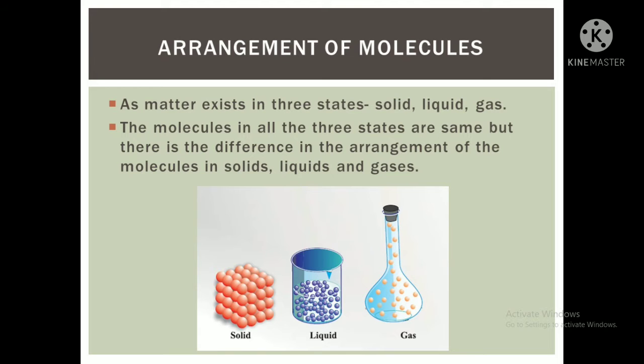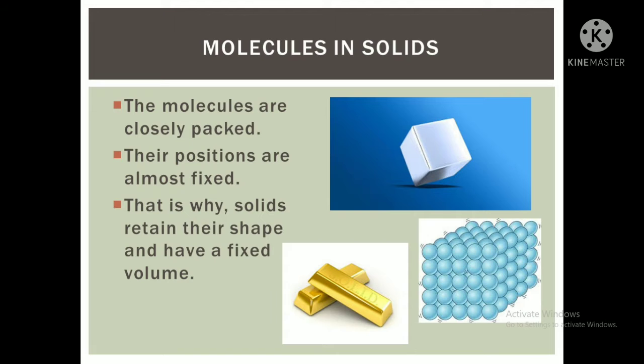Molecules in solids. So molecules in solids are closely packed, one after one. That means they have very good bonding between them. And what will happen if they have very good bonding? It will not go - means all are friends to each other, all help each other. They have a fixed position in their place. So they are almost fixed and they will retain their shape and have a very fixed volume.